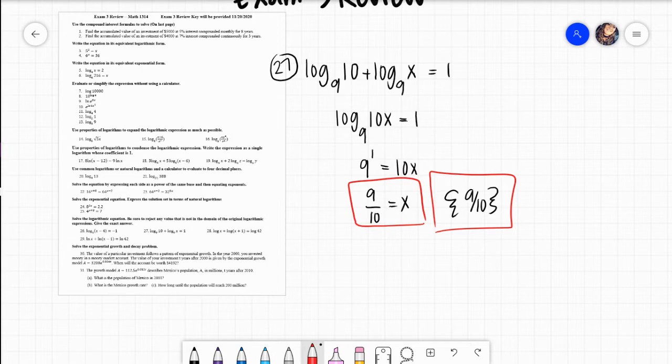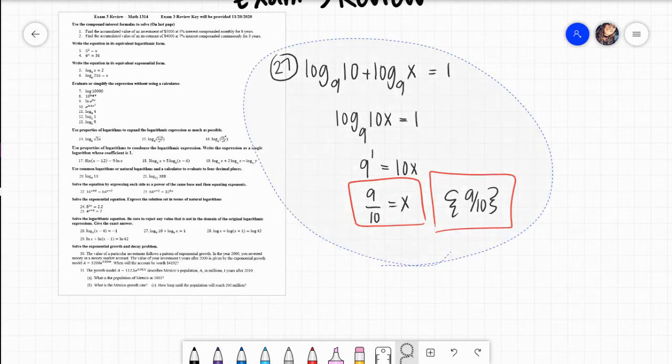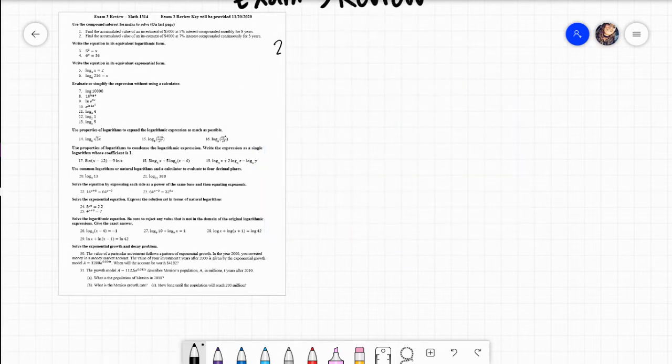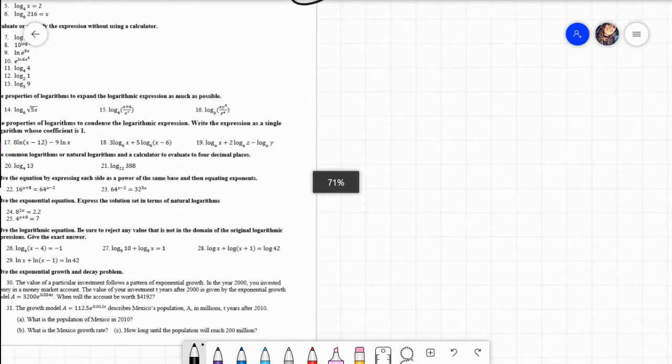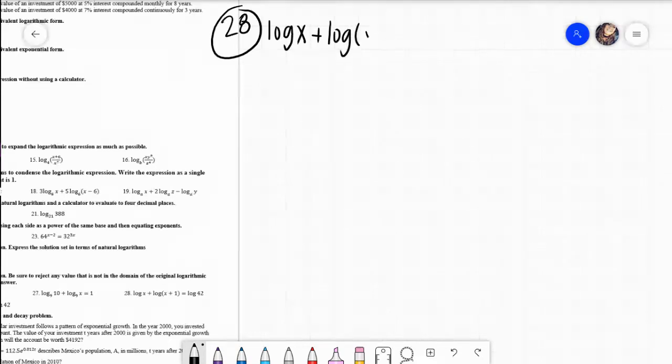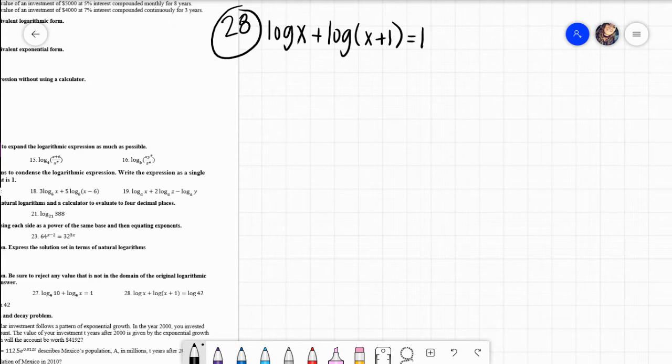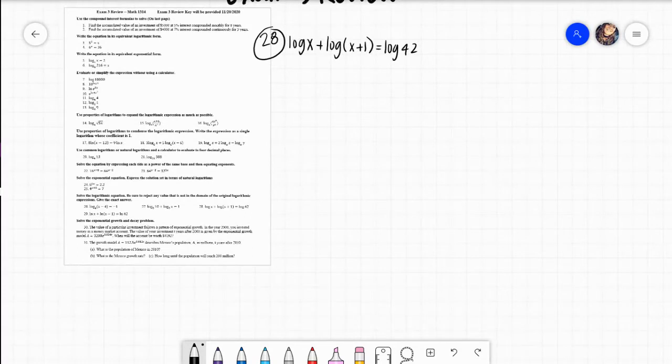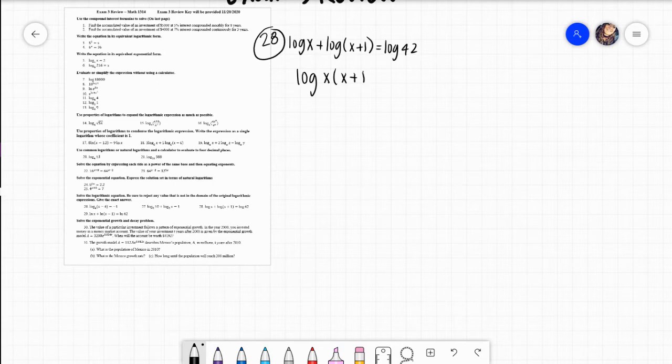So now we're going to look at problem 28. I'm actually going to go ahead and erase this one. So problem 28 says log of x plus log of x plus 1 equals log 42. The goal would be to get it to 1 log on the left-hand side, and because that is a sum, it's actually going to be a product. So I get log of x and then that's going to be times x plus 1 equals log of 42.